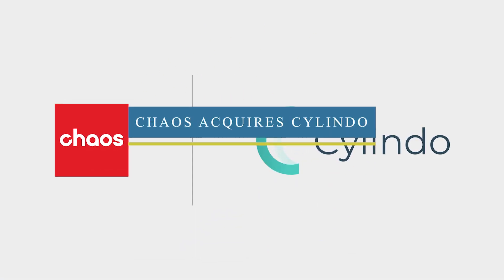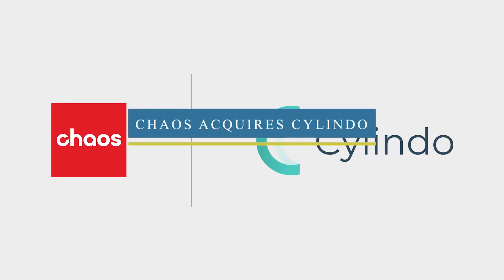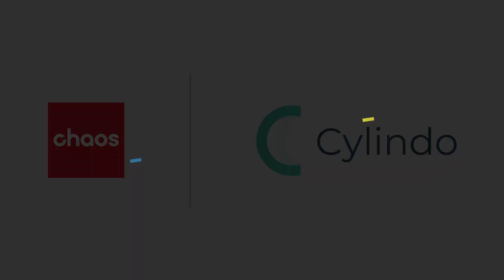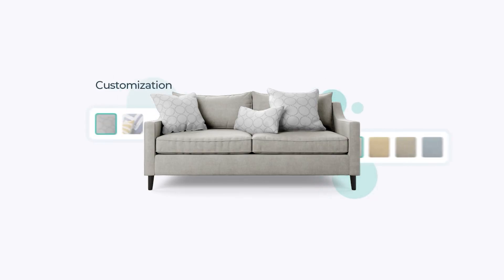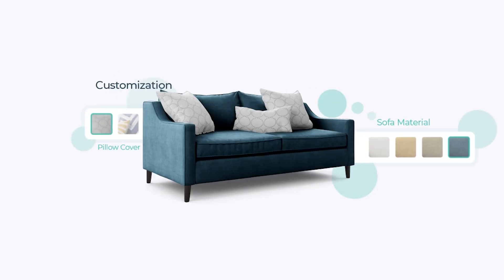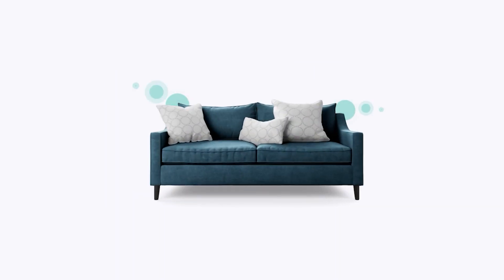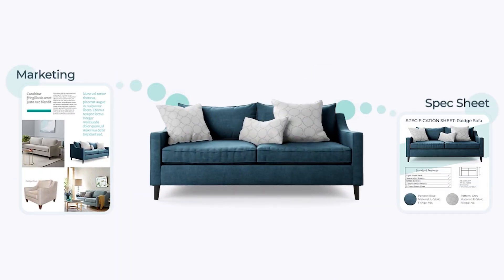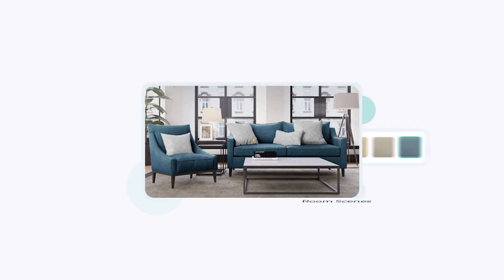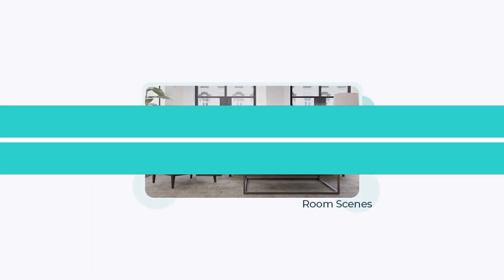Chaos has also announced the acquisition of Cylindo, a 3D product visualization platform for commerce that aims to simplify the creation of product configuration, AI and VR experiences, room scenes, and other interactive 3D sales tools.